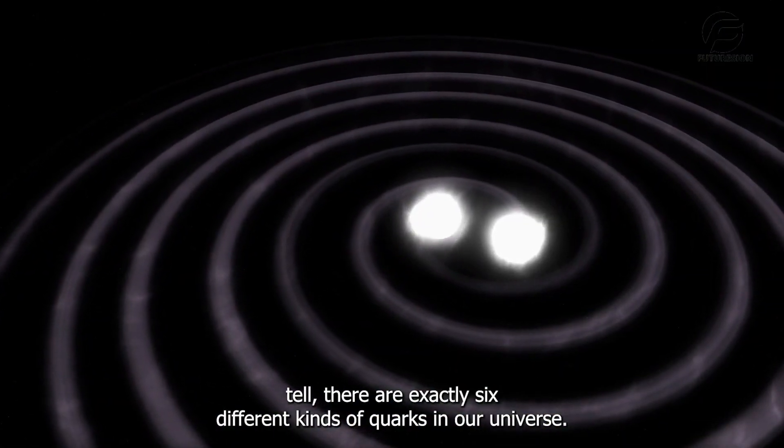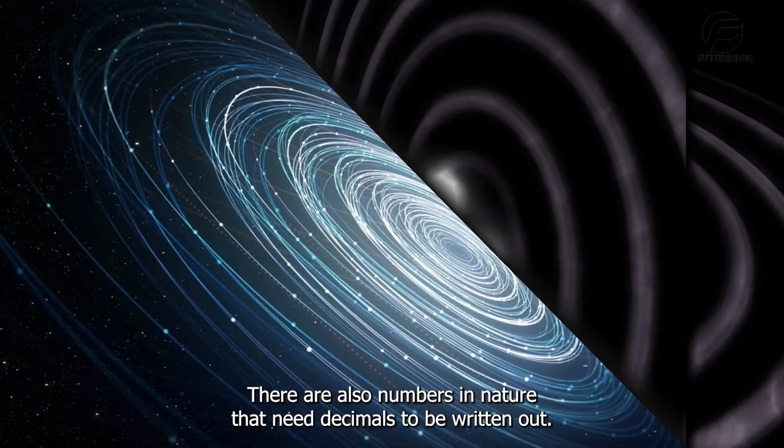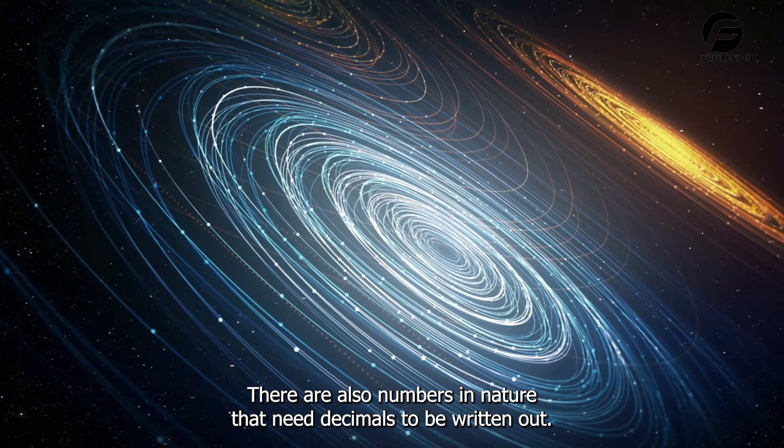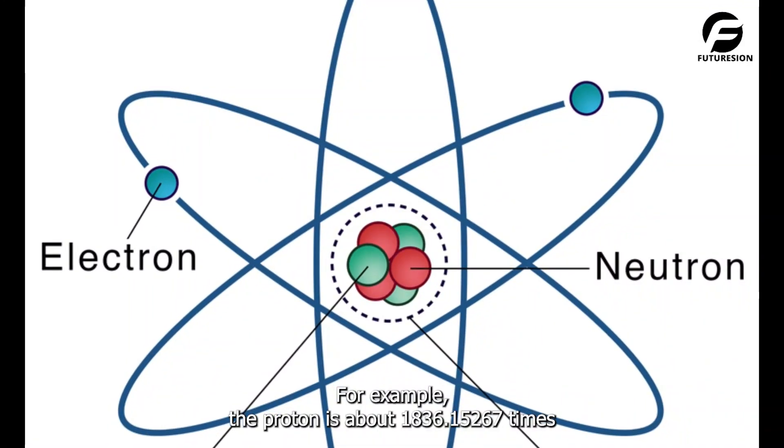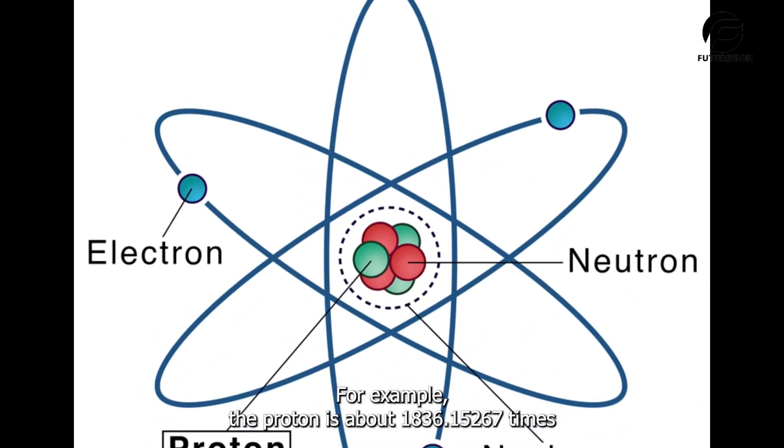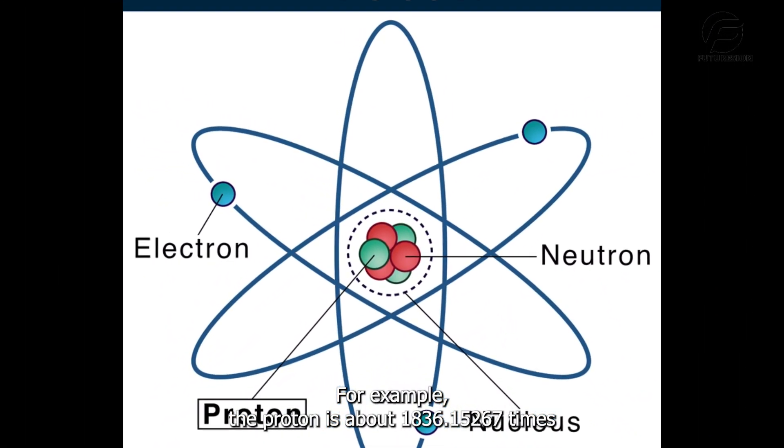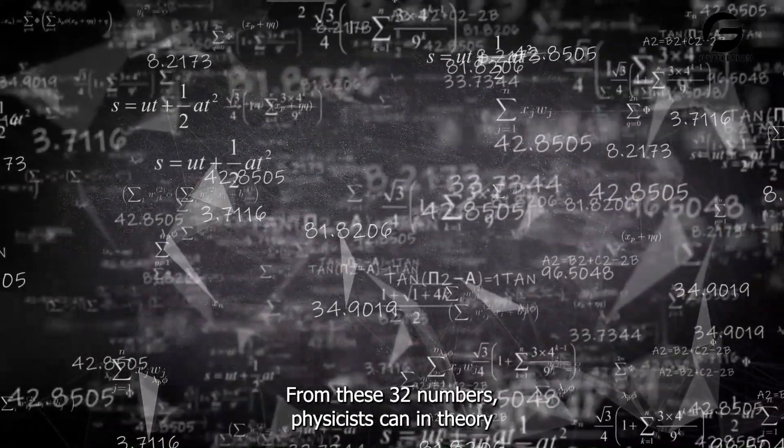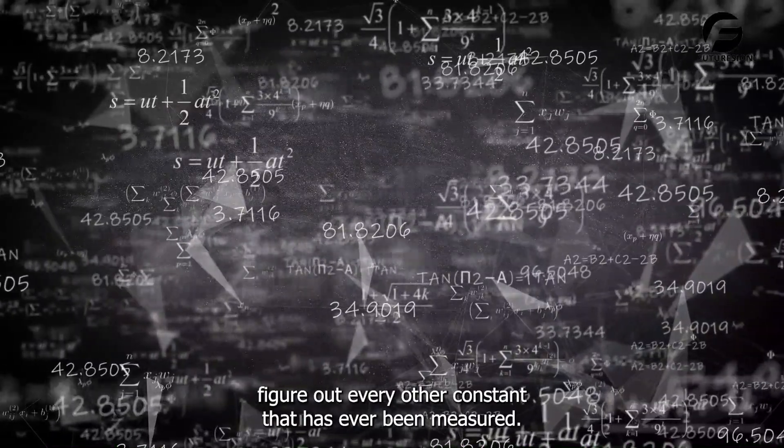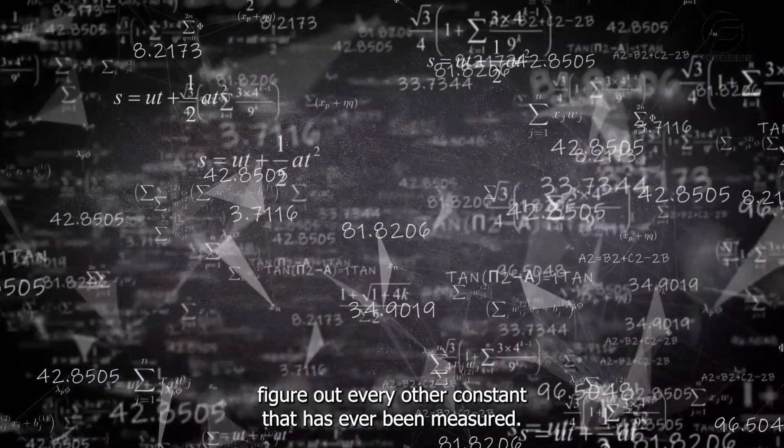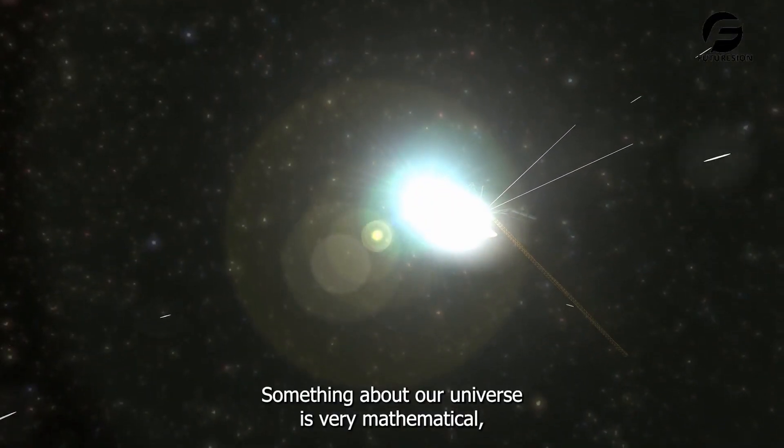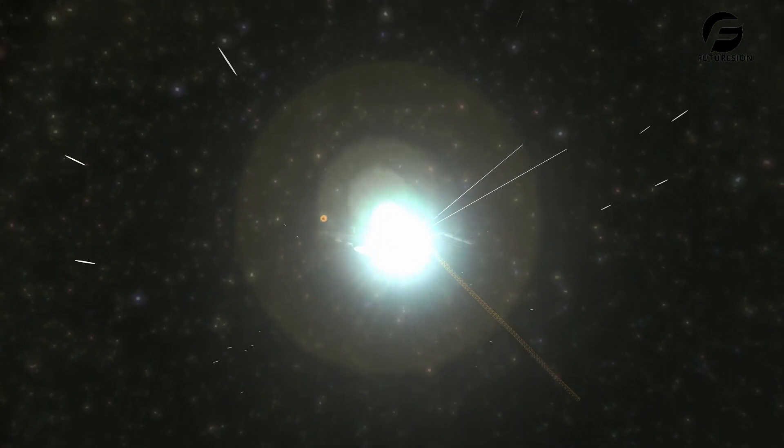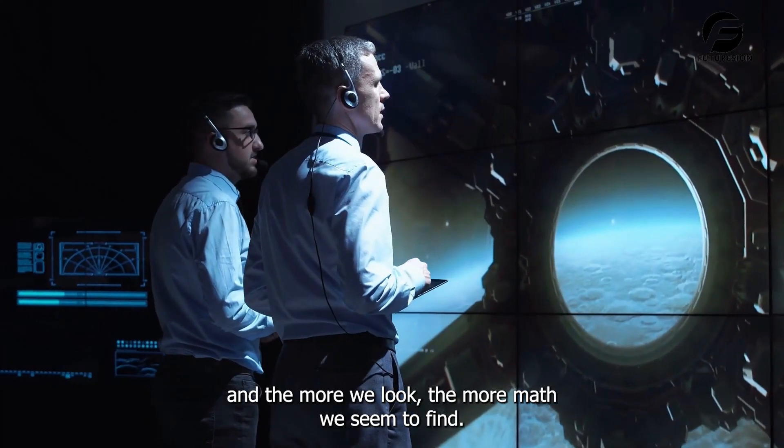And as far as we can tell, there are exactly six different kinds of quarks in our universe. There are also numbers in nature that need decimals to be written out. For example, the proton is about 1836.15267 times heavier than the electron. From these 32 numbers, physicists can, in theory, figure out every other constant that has ever been measured. Something about our universe is very mathematical, and the more we look, the more math we seem to find.